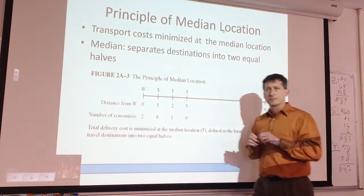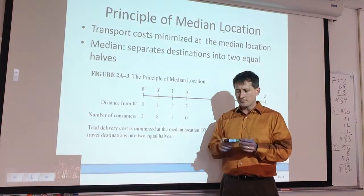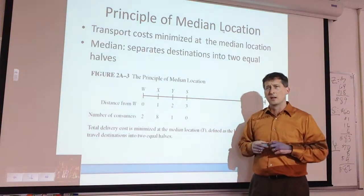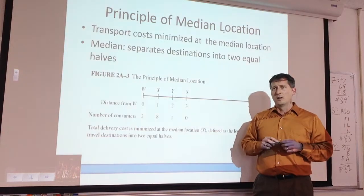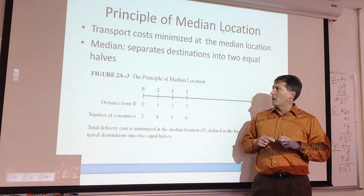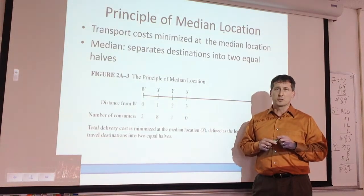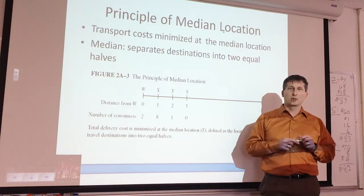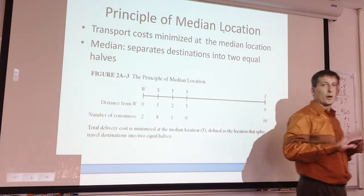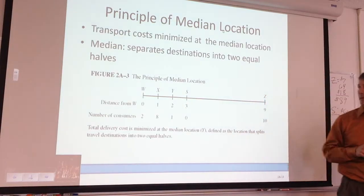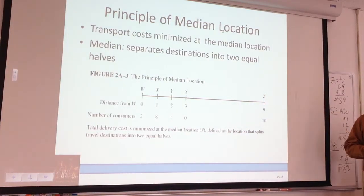The transport costs in this situation are all procurement costs then? Distribution — these are distribution costs. We've waived away procurement in this example.